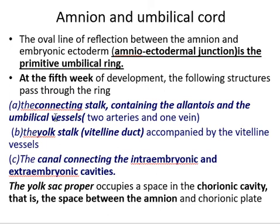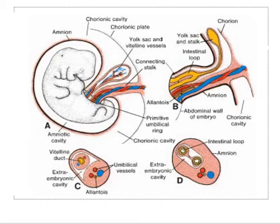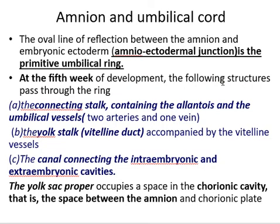At the sixth week of development, the following structures pass through the primitive umbilical ring: number one, the connecting stalk containing the allantois and umbilical vessels. The allantois is the extension of the yolk sac into the umbilical cord or connecting stalk. The allantois consists of two arteries and one vein.